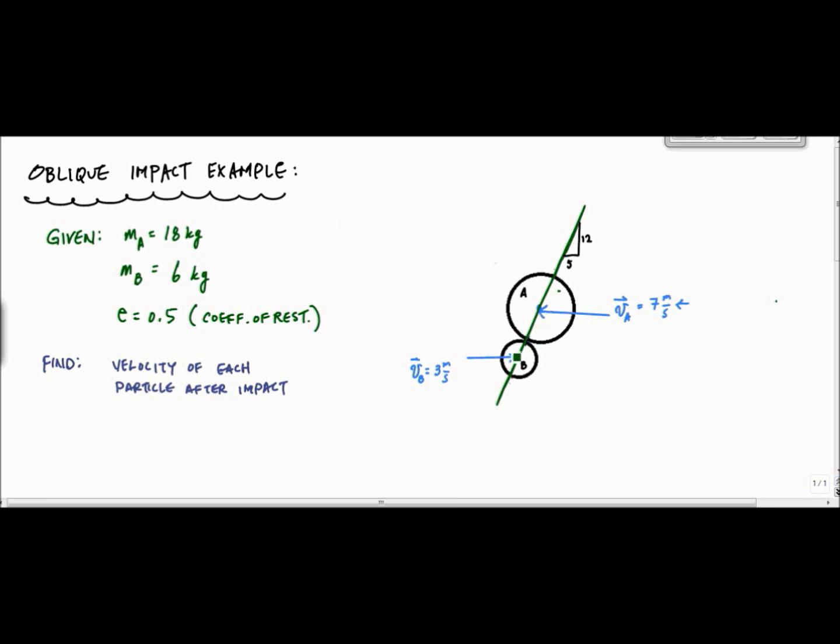Particle A and particle B collide. Mass A is 18 kilograms, mass B is 6 kilograms. Velocity is at 3 meters per second horizontally to the right. I got to give this a direction because otherwise it's not a vector - direction and magnitude. So here I got two particles colliding. Velocity of A is 7 meters per second, velocity of B is 3 meters per second. Coefficient of restitution between the two particles is 0.5.